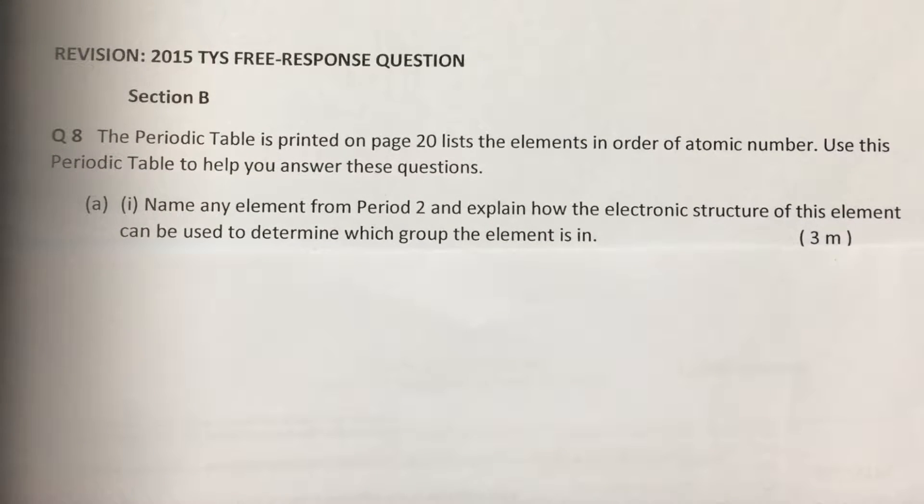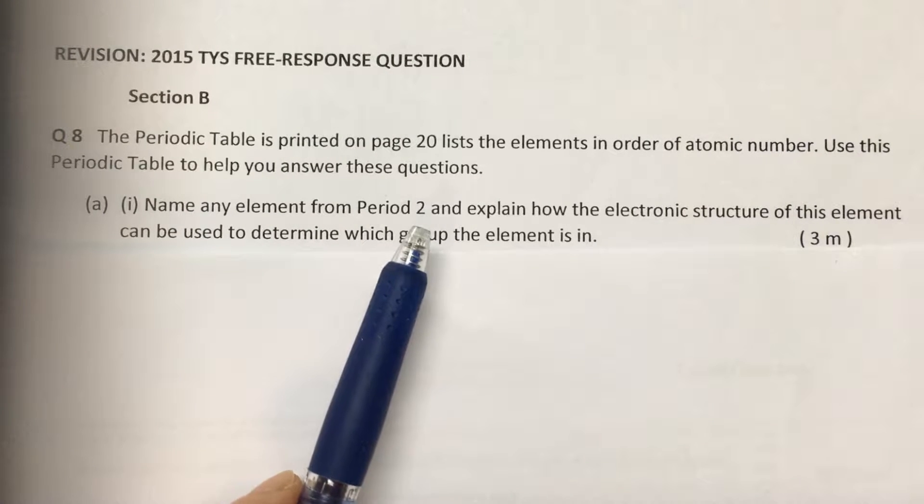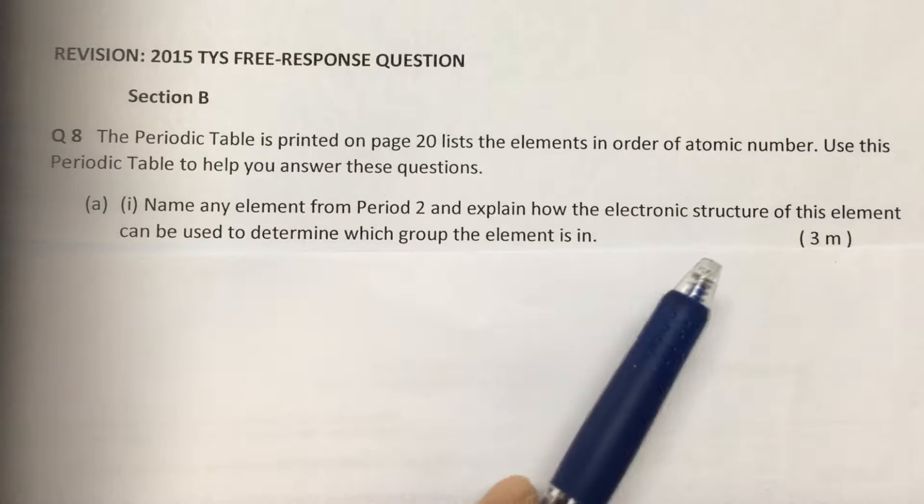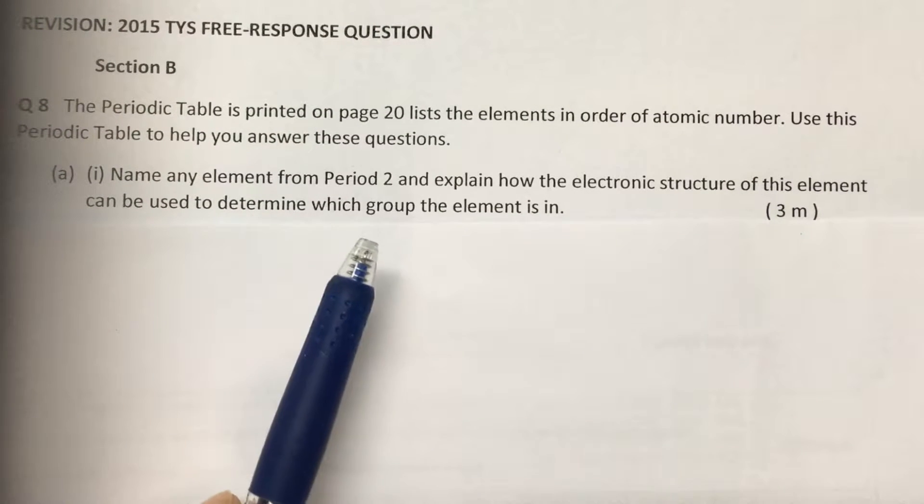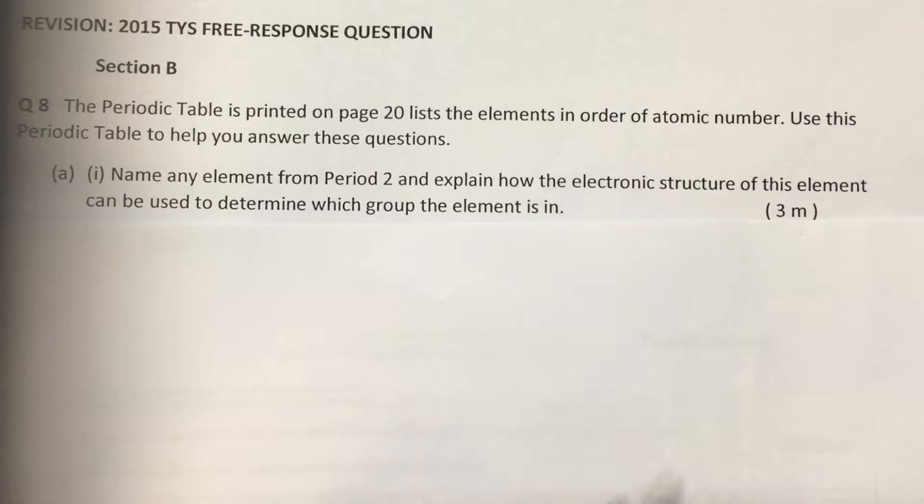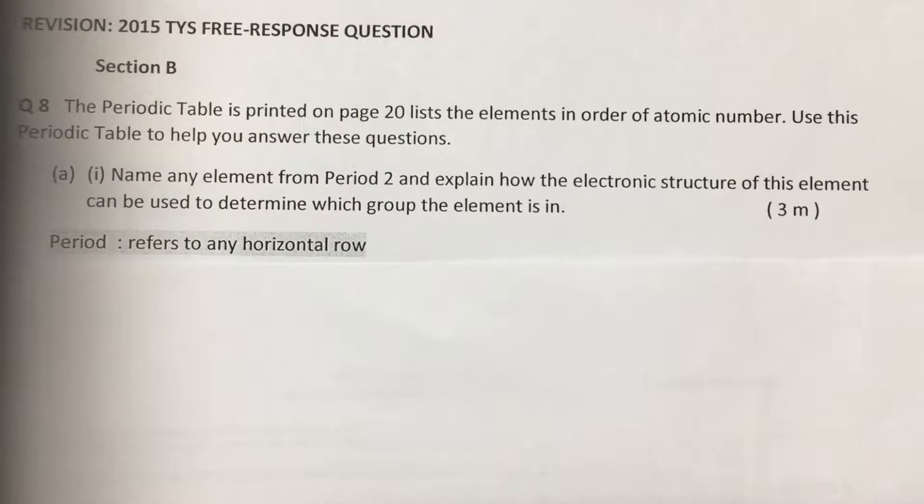Part A, Part 1: Name any element from period 2 and explain how the electronic structure of this element can be used to determine which group the element is in. First, let's define period. Period refers to any horizontal row.